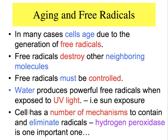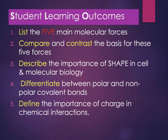Cells do have a number of mechanisms to capture and eliminate free radicals. One of those is the powerful bleach known as hydrogen peroxide, which is found inside peroxisomes. This concludes the first module of Chapter 2.